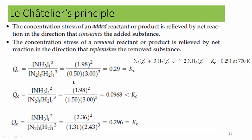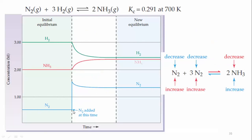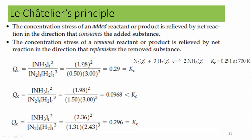In the previous case, I increased the concentration of N₂ from 0.5 to 1.5 — only nitrogen was added. The product concentration and hydrogen concentration remain the same; only nitrogen changed from 0.5 to 1.5. When you substitute these values and solve, you get Qc = 0.0968. This is not the equilibrium constant — it is Qc, and Qc is less than Kc.